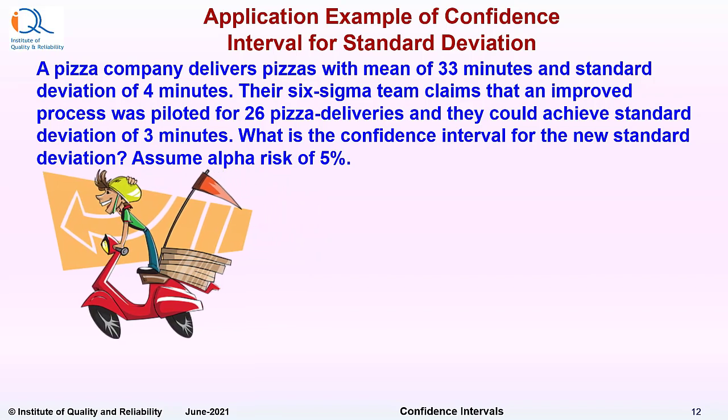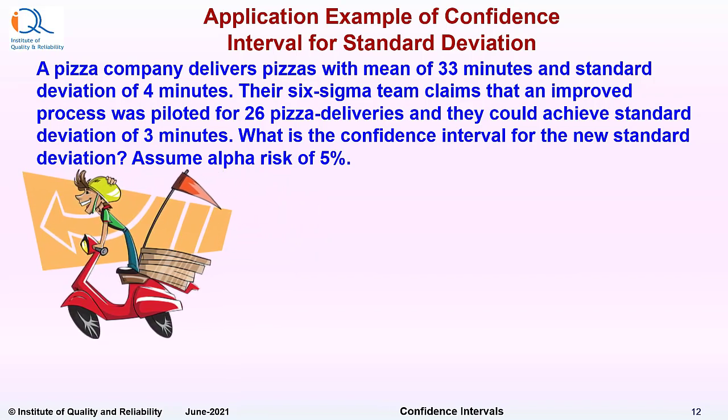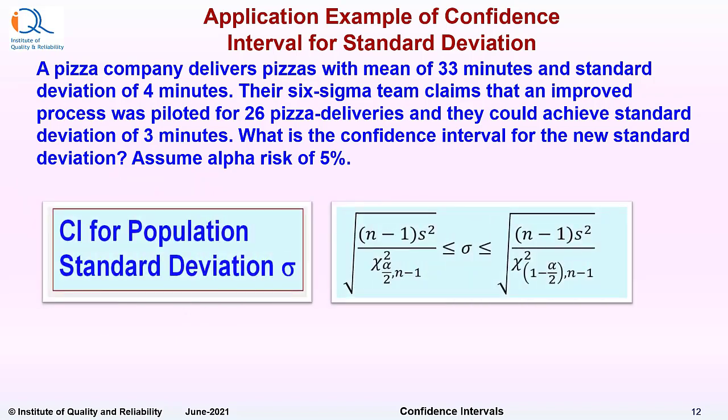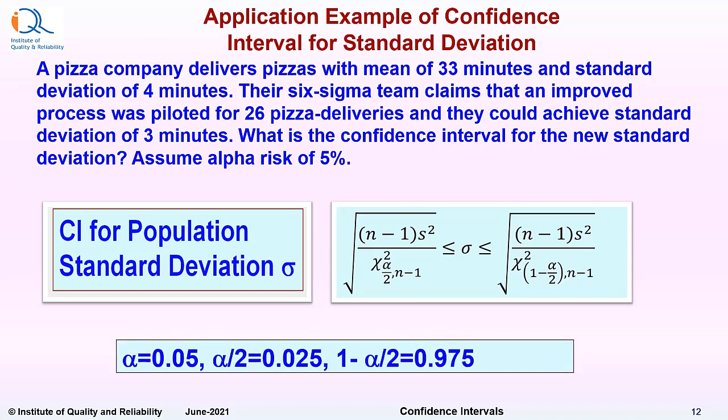What is the confidence interval for new standard deviation assuming alpha risk of 5%? So confidence interval for population deviation sigma, we have seen the formula. Here alpha is equal to 0.05, alpha by 2 is equal to 0.025, and therefore 1 minus alpha by 2 would be 0.975.